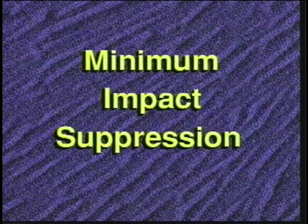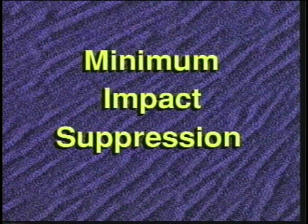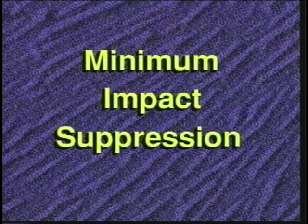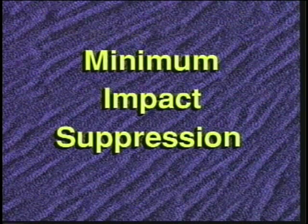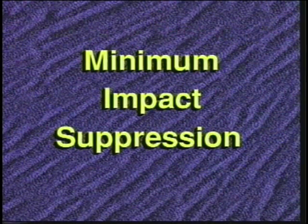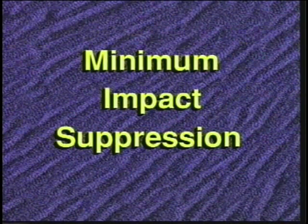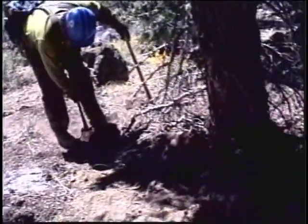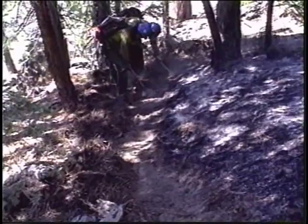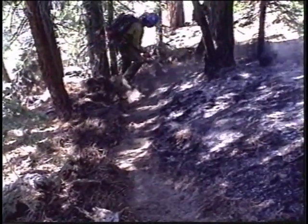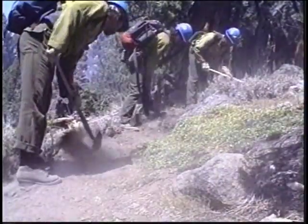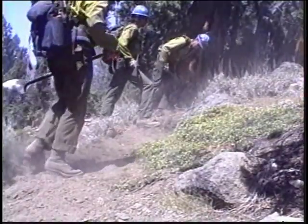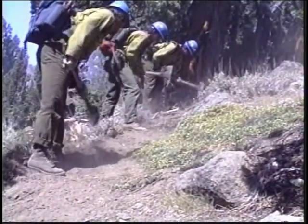Minimum impact suppression is the implementation of land management policies designed to meet resource management objectives and constraints. Land management agencies manage fire using tactics that reduce the environmental impacts resulting from suppression efforts. It is important that the crew boss understand these tactics. Minimum impact suppression is an increased emphasis on doing the job of suppressing a wildland fire while maintaining a high standard of caring for the land. Actual fire conditions and your good judgment will dictate the actions you take. Consider what is necessary to halt fire spread and ensure it is contained within the fire line or designated perimeter boundary.